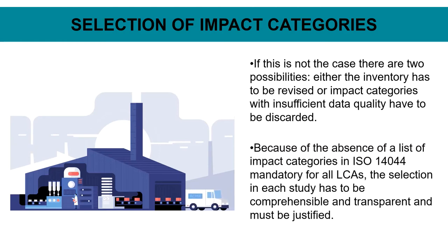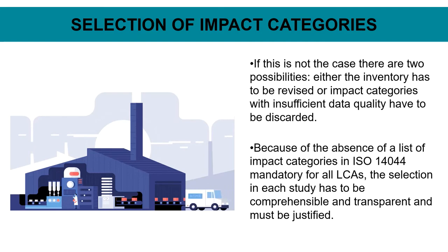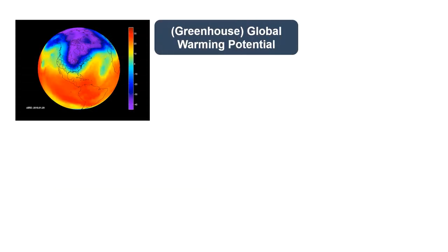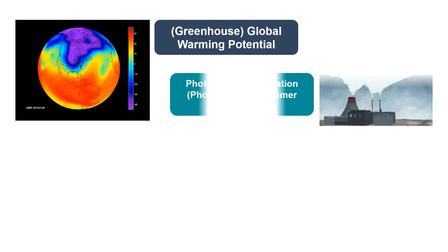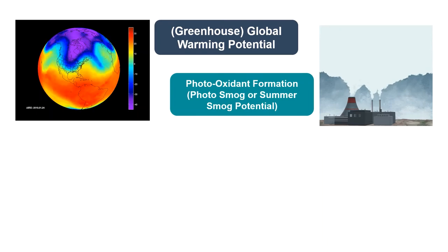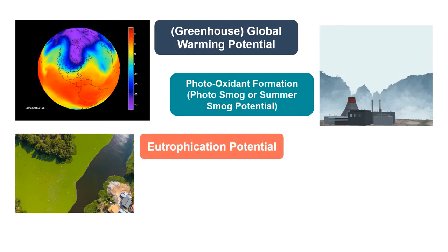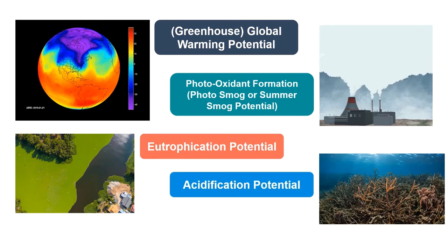Because of the absence of a mandatory list of impact categories in ISO 14044 for all LCAs, the selection in each study has to be comprehensible, transparent, and justified. Examples of impact categories include: greenhouse global warming potential, photo-oxidant formation (photo smog or summer smog potential), eutrophication potential, and acidification potential.